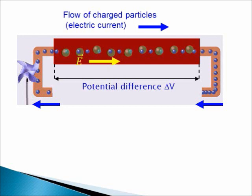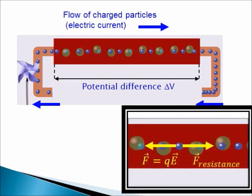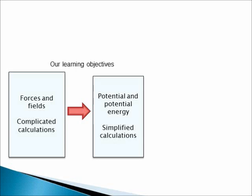The charged particles will start moving under the influence of the electric field. So we could find the motion of each charged particle by applying Coulomb's law that we have studied. In practice, such calculations will be very difficult because the number of particles is so large. So instead of using equations for forces that lead to very complicated calculations, we will rely on concepts of potential and potential energy that simplify calculations tremendously.